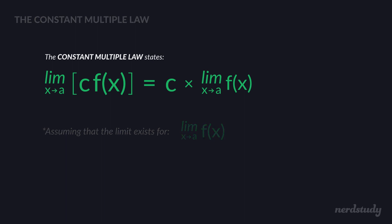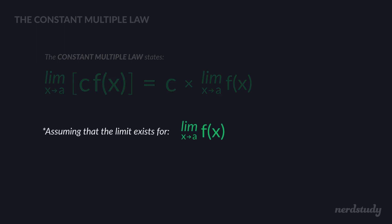What the constant multiple law states is that the limit as x approaches a for a constant multiplied by a function is equal to just the constant multiplied by the limit of the function. In this scenario, we need to make sure that the limit as x approaches a for f of x exists; if it doesn't, we can't use the constant multiple law.